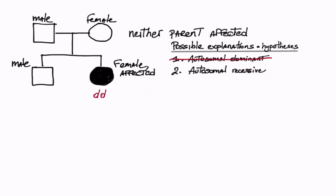The affected daughter is little d little d. The brother could be big D little d or big D big D, and each parent must be big D little d. The hypothesis fits the data.